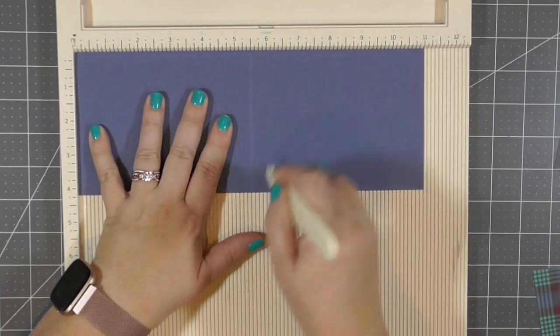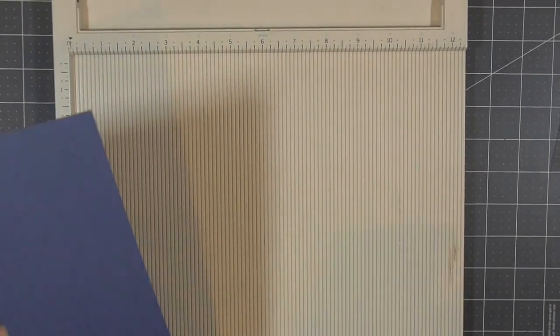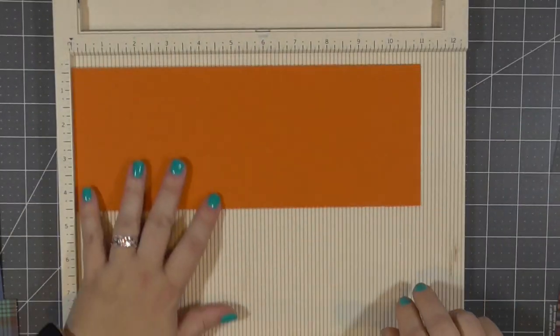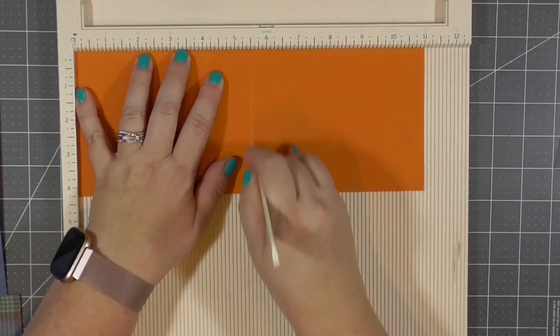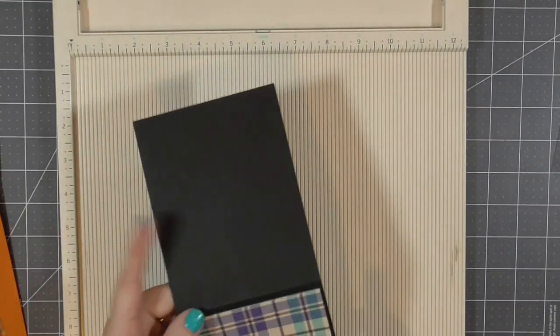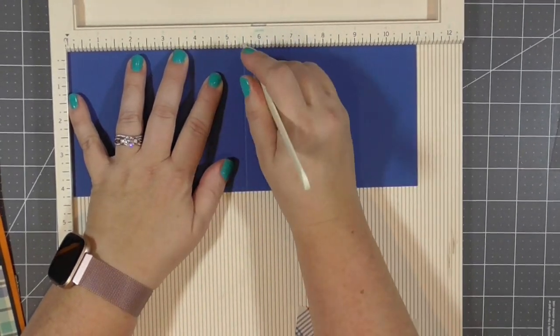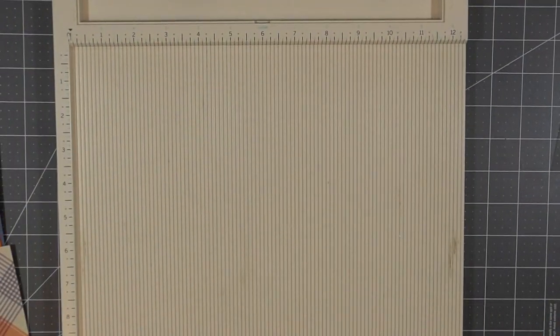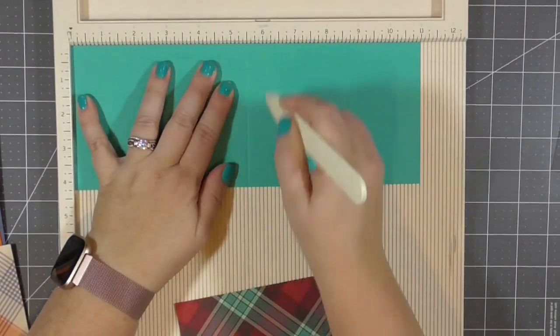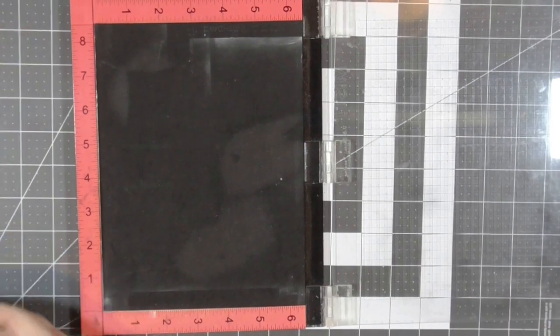So the first thing I'm going to do is score the card bases and because I am using the card sketch the way it is laid out I'm going to do everything in every step all at one time. So I'm going to do all of the scoring of the card bases at one time. Then I will do all of the stamping at one time.